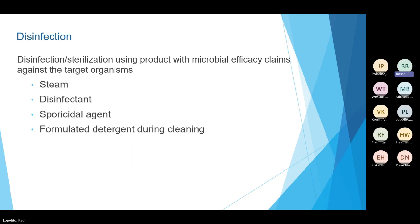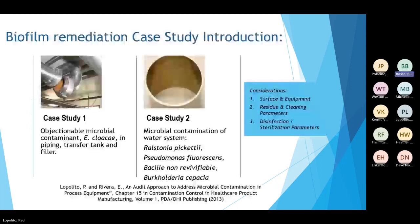Another option is formulated detergent during cleaning. There are alkaline and acidic formulated detergents that have microbial claims. The use of these products are a dual purpose by removing the soil residue, or the EPS, as well as the microbial remediation. In addition, acidic detergents can provide passivation on stainless steel surfaces, which decrease the potential for biofilm formation. And next I'll hand it over to Diana to discuss case studies.